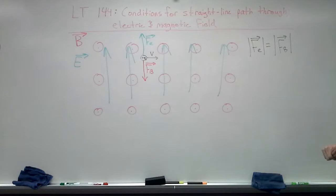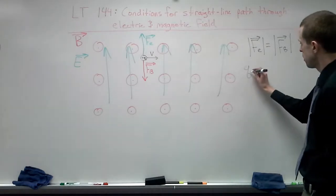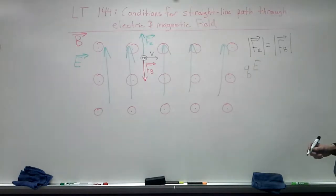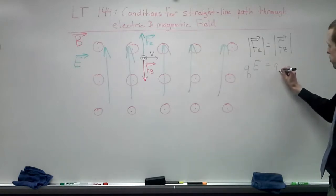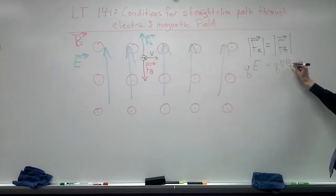The electric force, in terms of the electric field, is just q times the electric field, the magnitude of the electric field. And then the magnitude of the magnetic force is qvB times the sine of the angle.